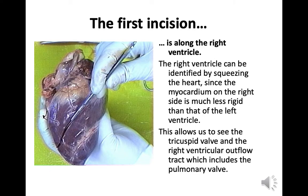The first incision is along the right ventricle. The right ventricle can be identified by squeezing the heart, since the myocardium on the right-hand side is much less rigid than that of the left ventricle. This allows us to see the tricuspid valve and the right ventricle outflow tract, which includes the pulmonary valve.